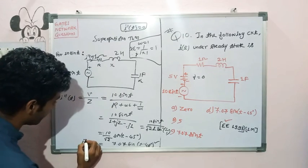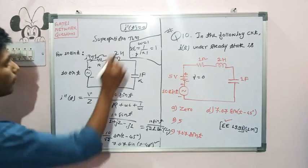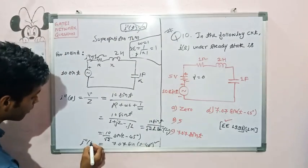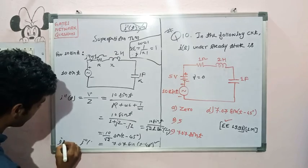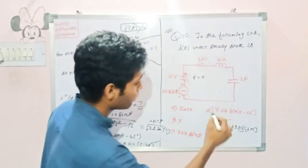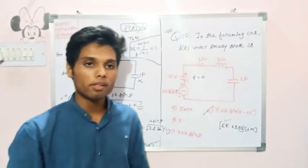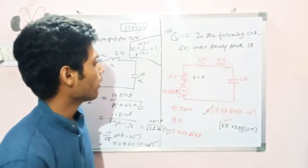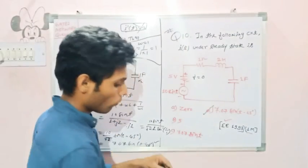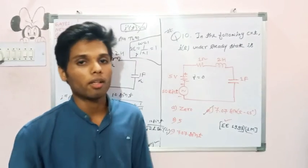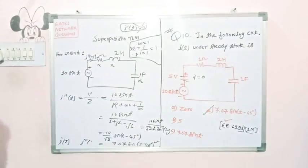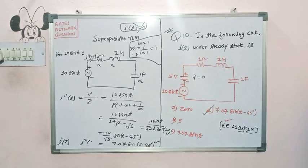Since I'(T) equals 0, the total I(T) at steady state is equal to I''(T), which is 7.07 sin(T − 45°). This is the final answer for this very important one-mark question from GATE 1993. Thanks for watching and stay tuned.